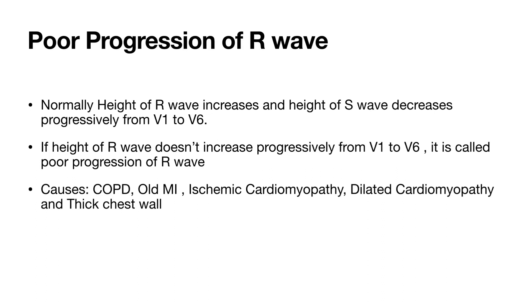Poor progression of R wave. Normally, height of R wave increases progressively from V1 to V6 and height of S wave decreases progressively from lead V1 to V6. Whereas, in leads V3 and V4, height of R and S waves are equal approximately. If height of R wave does not increase progressively from lead V1 to lead V6, it is called poor progression of R wave. Causes of poor progression of R wave are chronic obstructive pulmonary disease COPD, old myocardial infarction, ischemic cardiomyopathy, dilated cardiomyopathy, thick chest wall, etc.